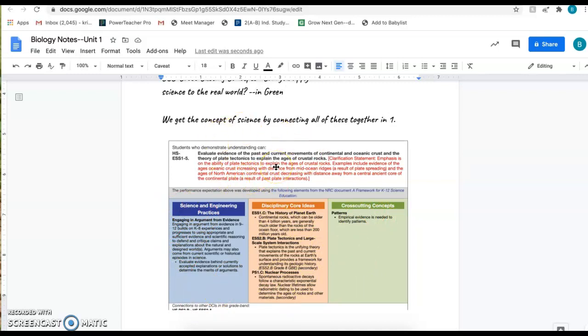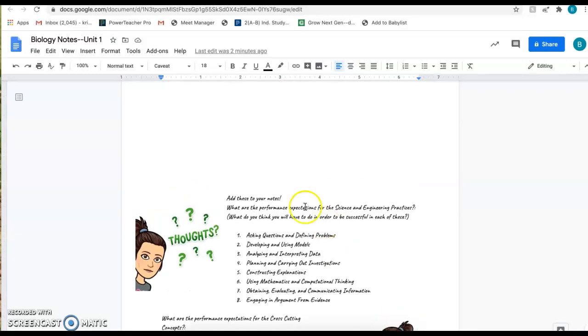One thing we'll be looking at are our standards. This is an example of one of your standards. Notice how it has three different colors: science and engineering practice is in blue, your disciplinary core idea is in orange, and your cross-cutting concept is in green.